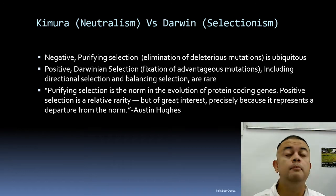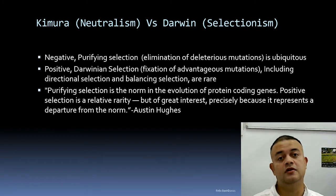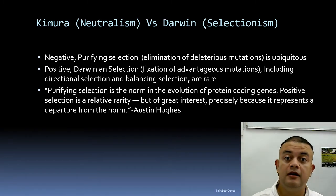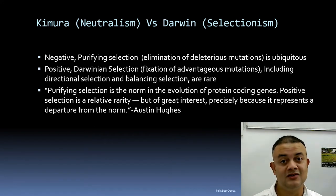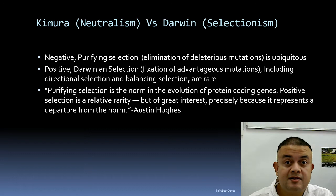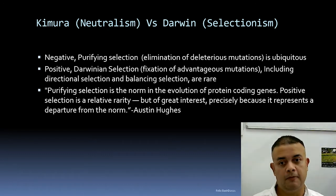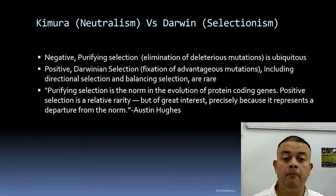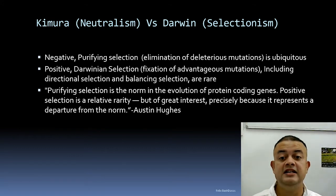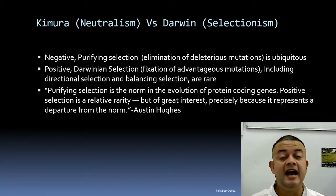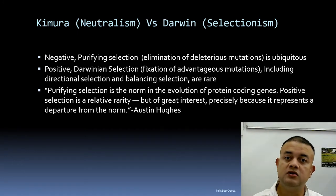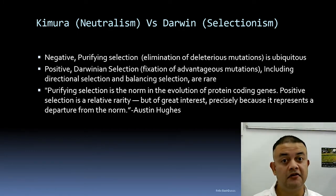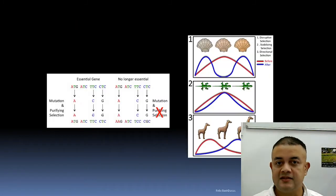Most of the mutations are subject to purifying selection — that is exactly what neutralism is about. As Austin Hughes stated: 'Purifying selection is a norm in the evolution of protein-coding genes. Positive selection is a relative rarity, but of greatest interest precisely because it represents a departure from the norm.' So it is very unusual, and that is why it is very interesting.